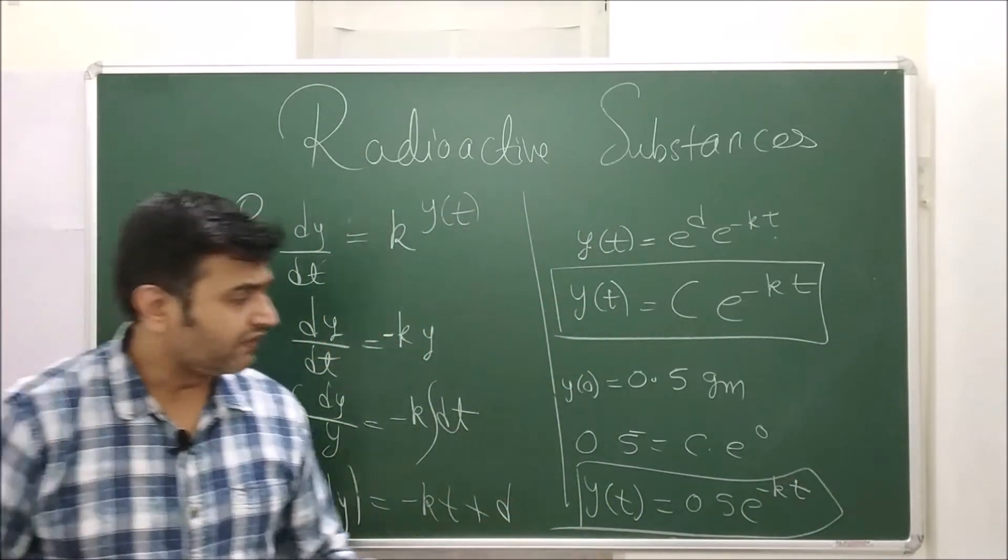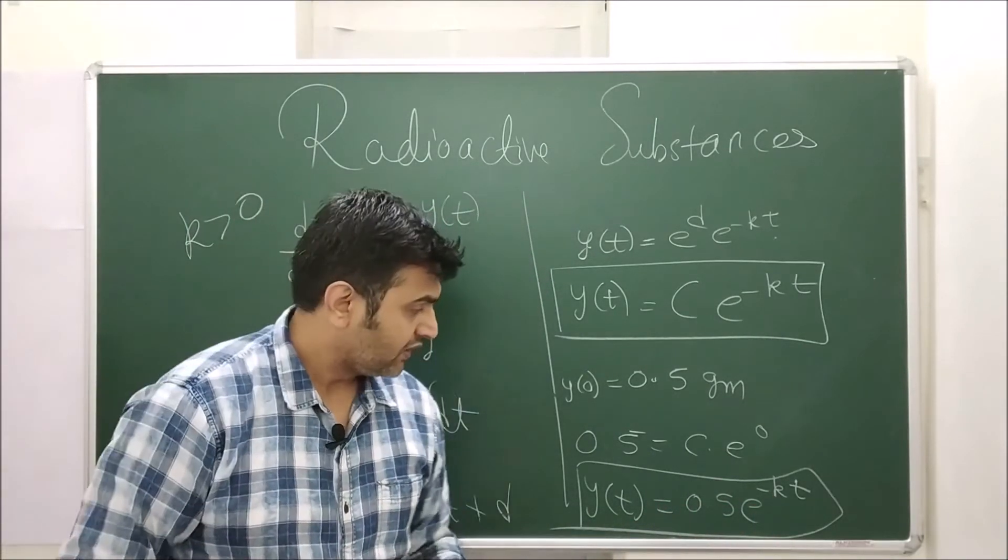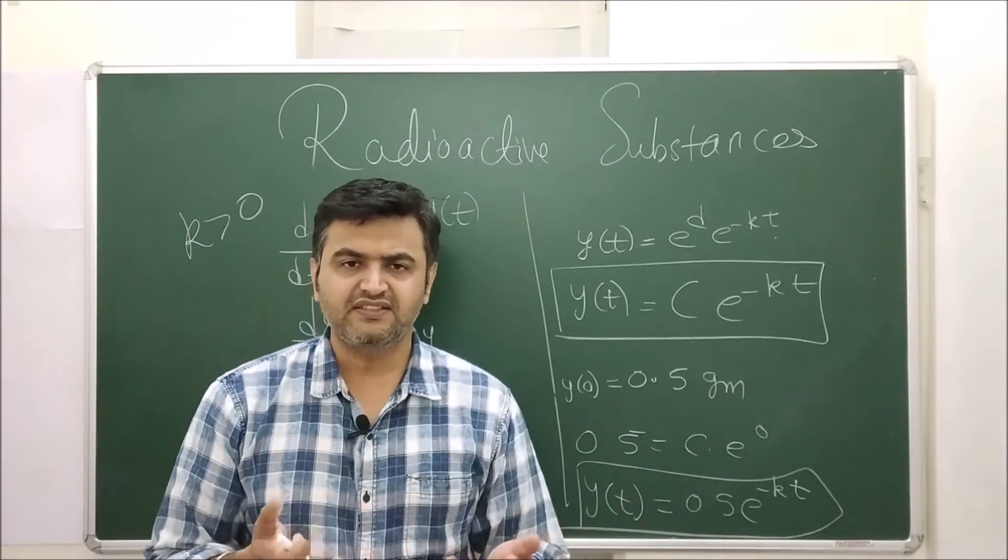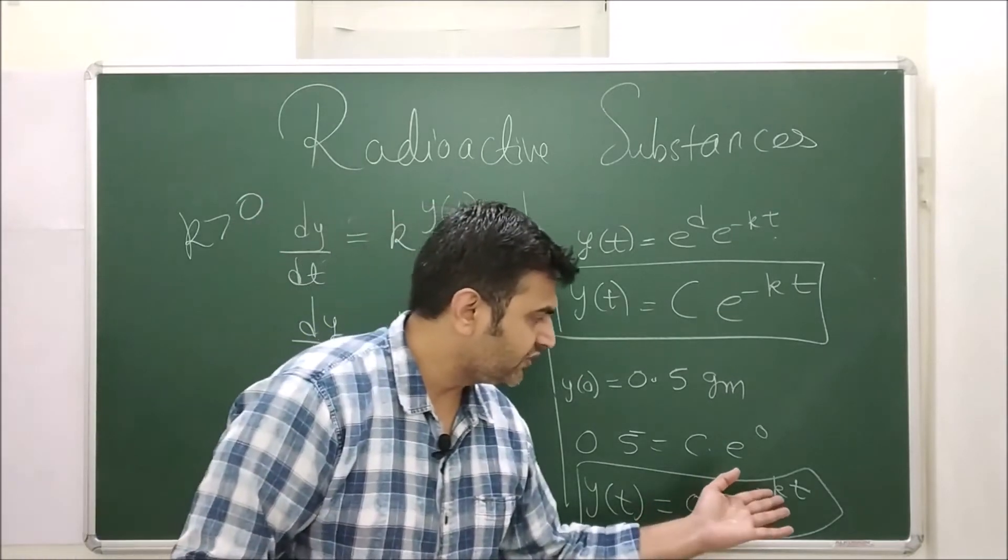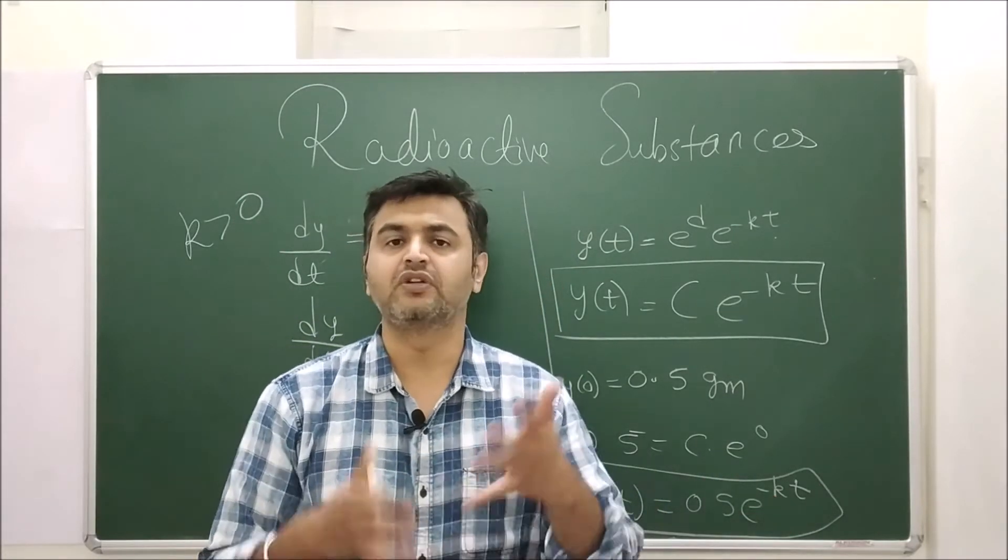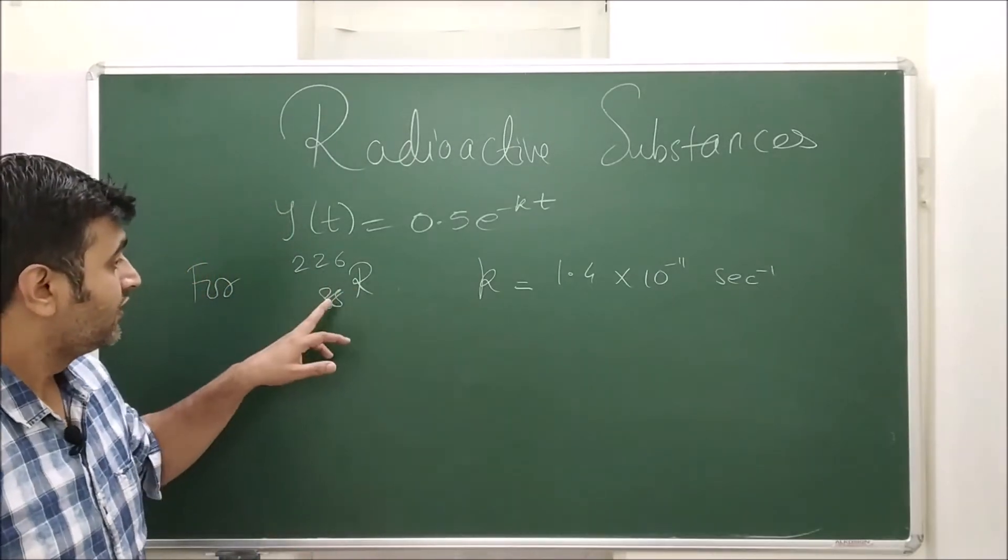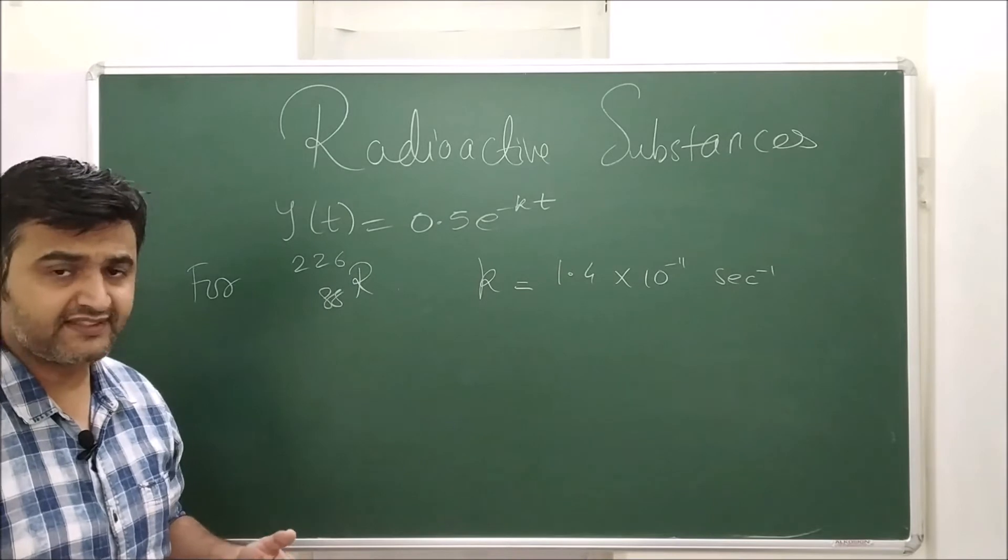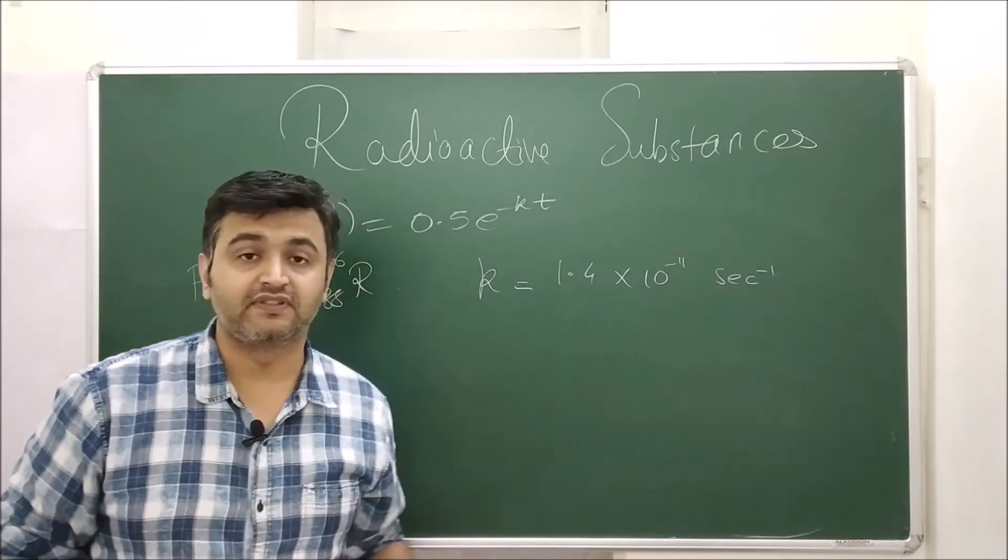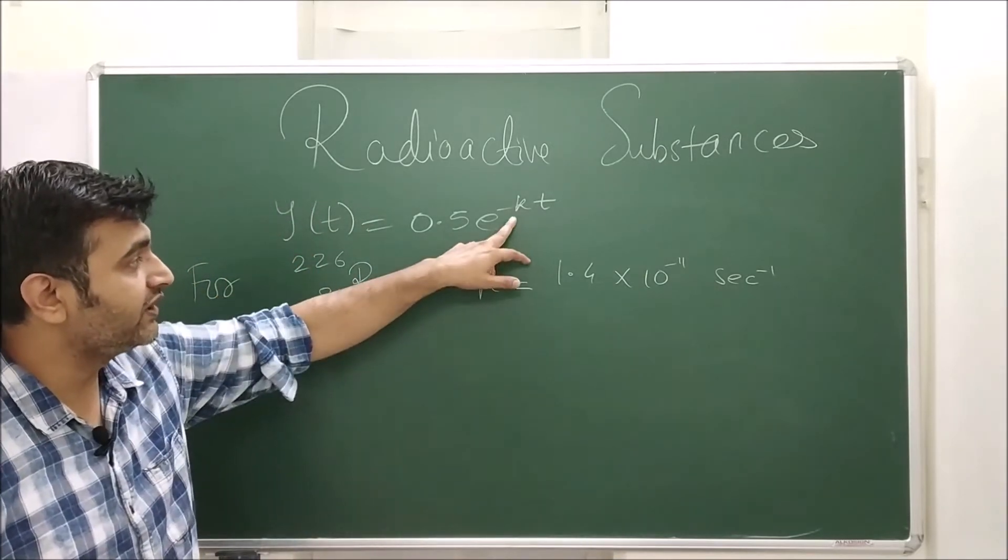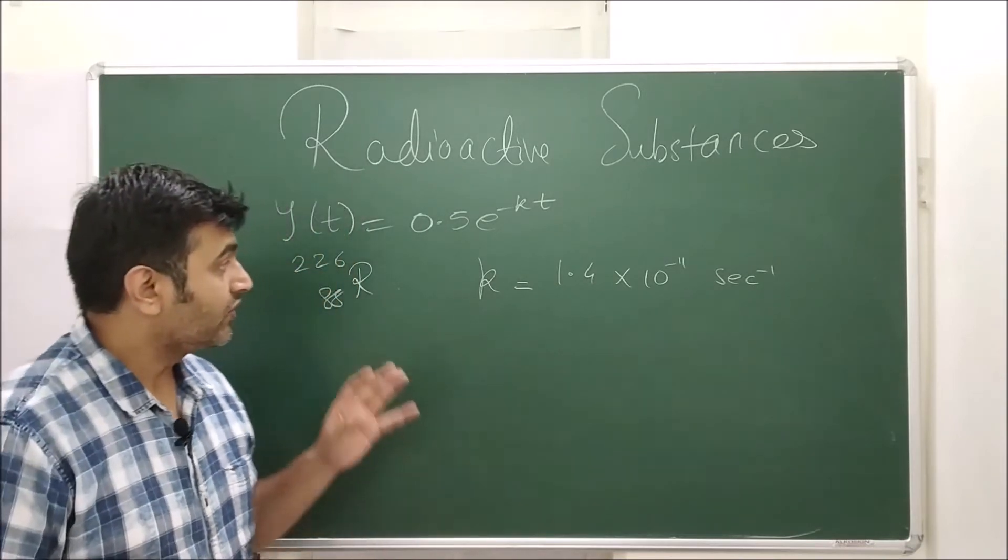Where k is some constant. Once you have the value of k, you plot the graph and get the exponential graph. What is this k? It's not fixed, it keeps changing as your substance changes. Usually you find it by experiments on radioactive substances. For radium, this data from the Krasig book, k = 1.4 × 10^(-11) sec^(-1). This is the solution, you put the value of k and get the solution for radium.